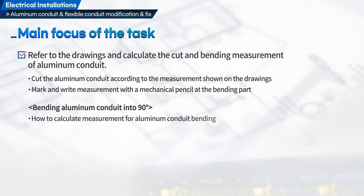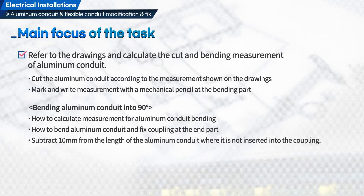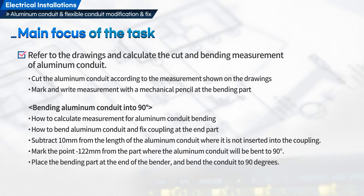How to calculate the measurement for aluminum conduit bending: subtract 10 mm from the length of the aluminum conduit where it is not inserted into the coupling. Mark the point minus 122 mm from the part where the aluminum conduit will be bent to 90 degrees. Place the bending part at the end of the bender and bend the conduit to 90 degrees.